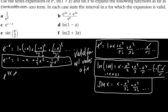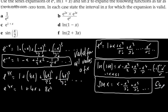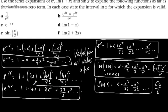So for e to the 4x, all we're going to do is use the e to the x expansion and sub in 4x instead of x. We get 1 plus 4x plus 4x squared over 2 factorial plus 4x cubed over 3 factorial. So e to the 4x equals 1 plus 4x plus 8x squared — since 16x squared over 2 gives 8 — plus 32 over 3 x cubed, since 64 over 6 simplifies to 32 over 3. And that is valid for all values of x.